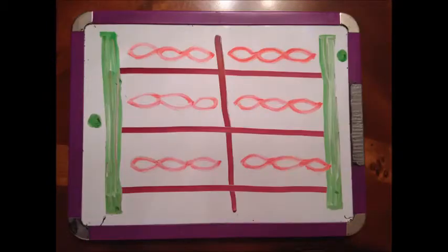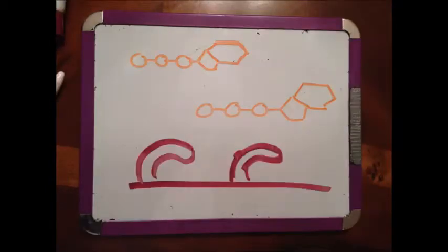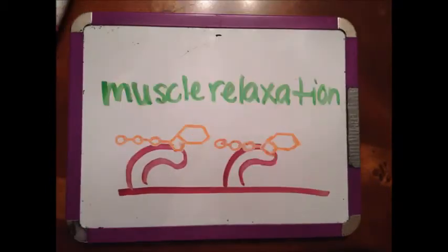Then an ATP molecule will attach itself to the head of the myosin to power muscle relaxation. The troponin and tropomyosin are then returned to their resting area until the next contraction.